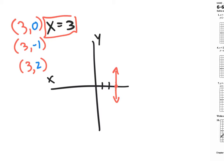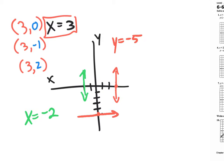So x equals any number will be a vertical line crossing through the x-axis at that value. If I said graph x equals negative 2, it's a vertical line through negative 2 on the x. Likewise, y equals negative 5 will be a flat horizontal line crossing at negative 5 on the y. So: y equals a number gives a horizontal line; x equals a number gives a vertical line.